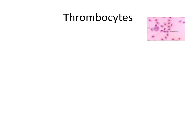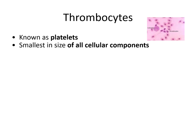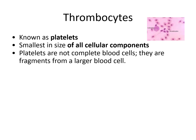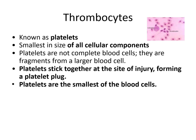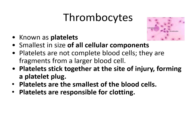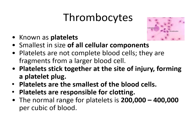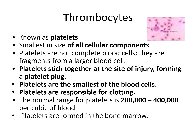Let's move on to thrombocytes, also known as platelets. They are the smallest in size of all cellular components. Platelets are not complete blood cells — they are fragments from a larger blood cell. Platelets stick together at a site of injury, forming a platelet plug, and are responsible for clotting. The normal range for platelets is 200,000 to 400,000 per cubic millimeter of blood. Platelets are formed in the bone marrow.